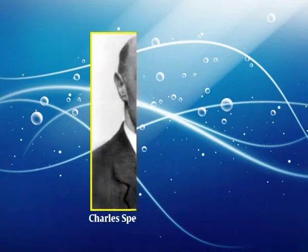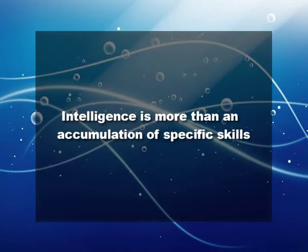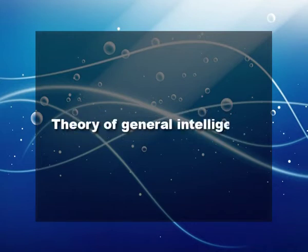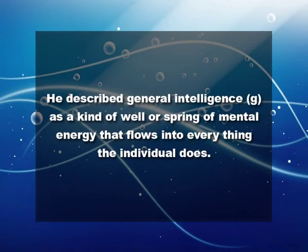A British psychologist named Charles Spearman began a theory of intelligence which suggested that intelligence is more than an accumulation of specific skills. In 1904, his theory of general intelligence was given. He described general intelligence, that is G, as a kind of well or supreme mental energy that flows into everything the individual does.